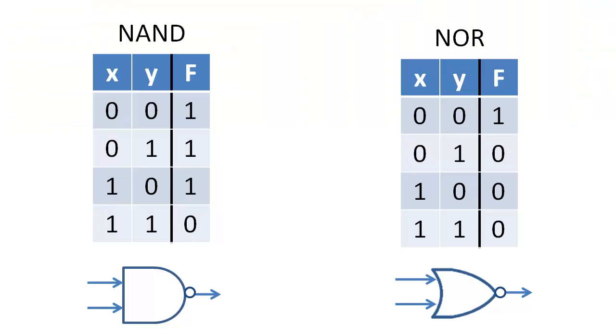Before we get started, I just want to make sure that you know that NAND is the complement of AND, and NOR is the complement of OR.